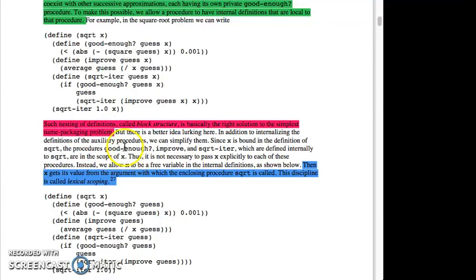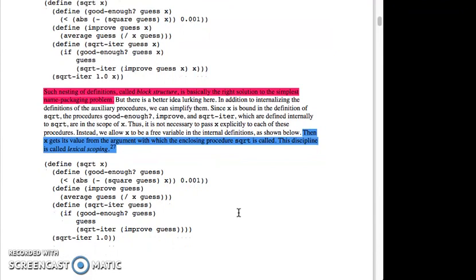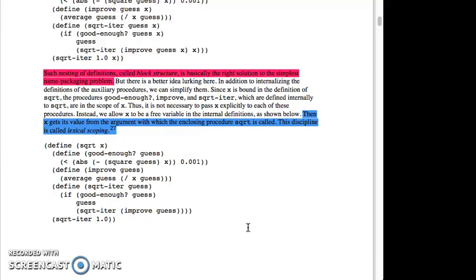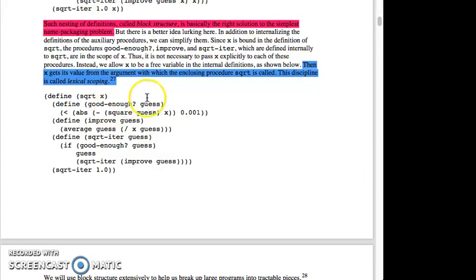It's basically the right solution to the simplest name packaging problem, but there is a better idea lurking here. In addition to internalizing the definitions of auxiliary procedures, we can simplify them. Since x is bound in the definition of square root and procedures good enough, improve, and square iter, which are defined internally to square root, are in the scope of x, thus it is not necessary to pass x explicitly to each of these procedures. Instead, we allow x to be a free variable in the internal definitions, as shown below. Then, x gets its value from the argument with which the enclosing procedure square root is called. This discipline is called lexical scoping. Define the square root of x, define good enough and guess, absolute value is square root guess of x, define improve and guess, average guess.